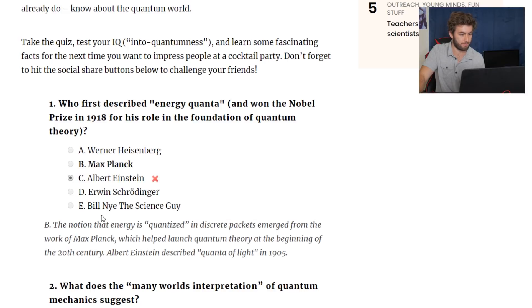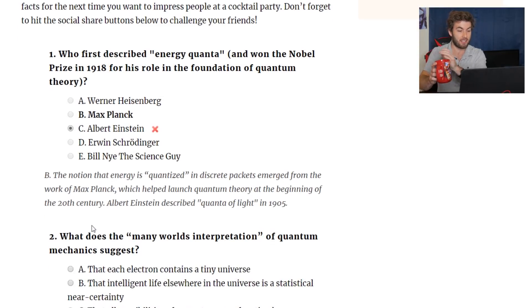I was wrong. Starting off strong, I guess. I'm already losing into quantumness points. The notion that energy is quantized in discrete packets emerged from the work of Max Planck, which helped launch quantum theory at the beginning of the 20th century. Albert Einstein described quanta of light in 1905. Okay, so it was Planck. That's nothing shocking. Another thing that led me to picking Einstein is because I thought he did coin the term quanta, but whatever.